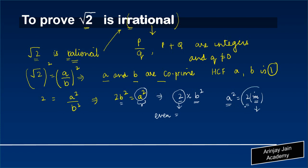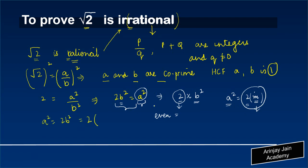If I substitute this value 2M in this particular equation, what I get is that A square was equal to 2B square, or in other words, 2 times B square.